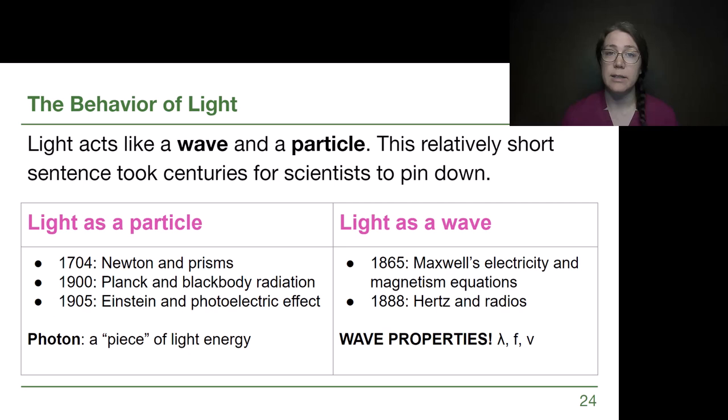Now light acts like a wave and like a particle. That's a simple enough sentence to write down and it's worth writing down in our notes, but for us to understand that both as students in this class and as humanity in general takes a lot of effort. It took centuries for scientists to actually figure out that light has both properties of being a particle and properties of being a wave. And if we look at the dates here, our understanding actually jumped back and forth.